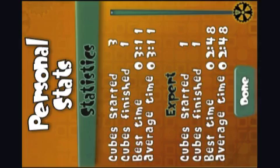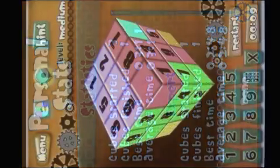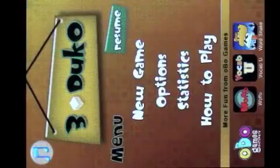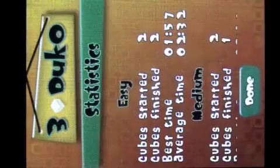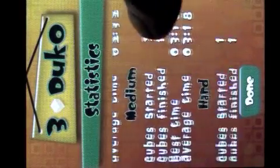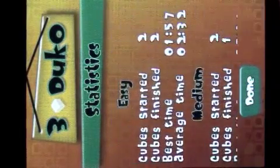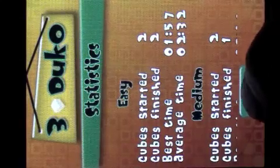Since 3DUCO is all about completing puzzles in the shortest amount of time, you can view your best times and scores and overall progress. From the main menu, select Statistics. Your games, best time, and average times are posted by the level. You simply scroll through the levels to view each one.